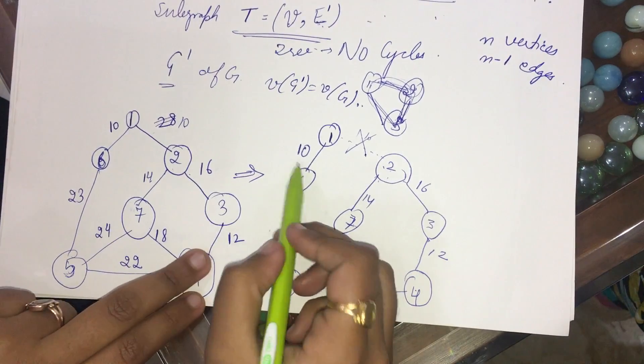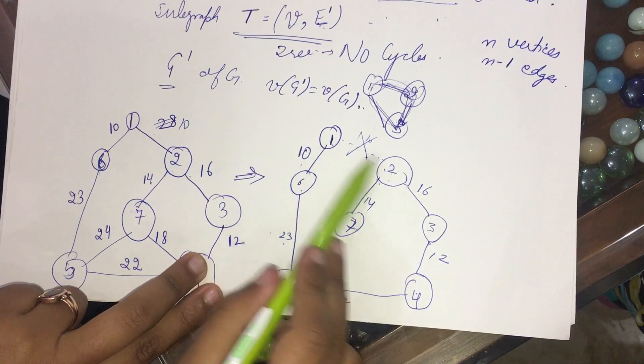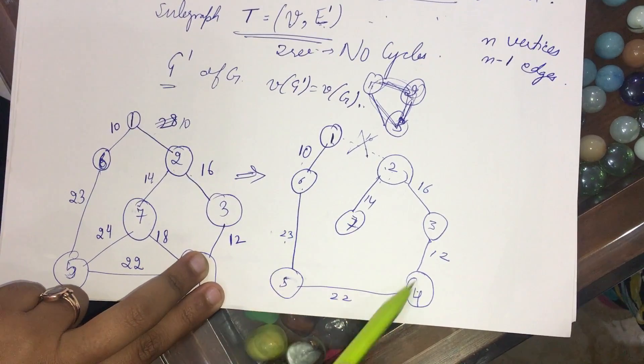So the cost would be the sum of all these values. So I have 1, 2, 3, 4, 5, 6, 7 vertices.